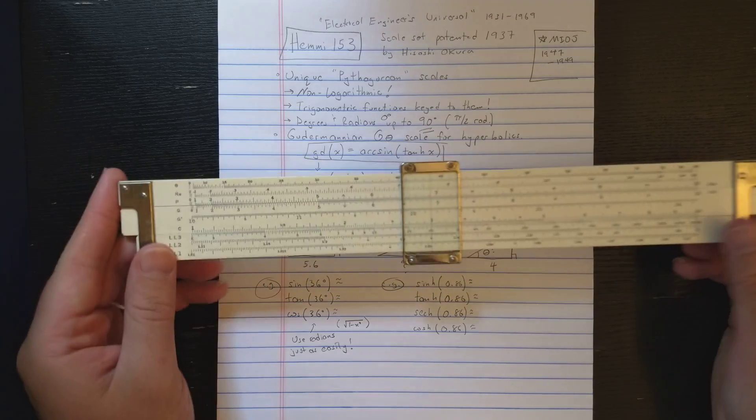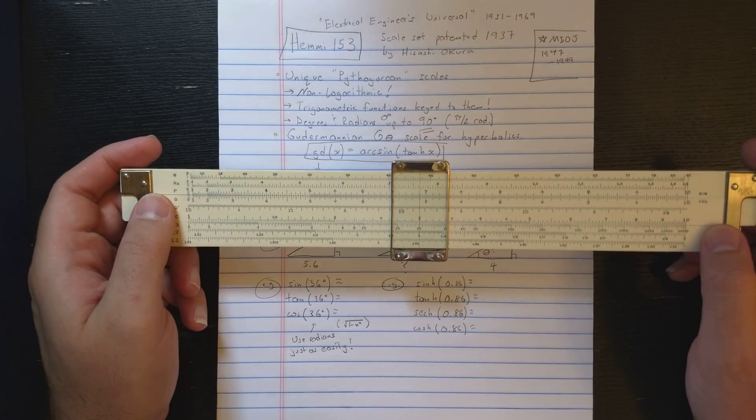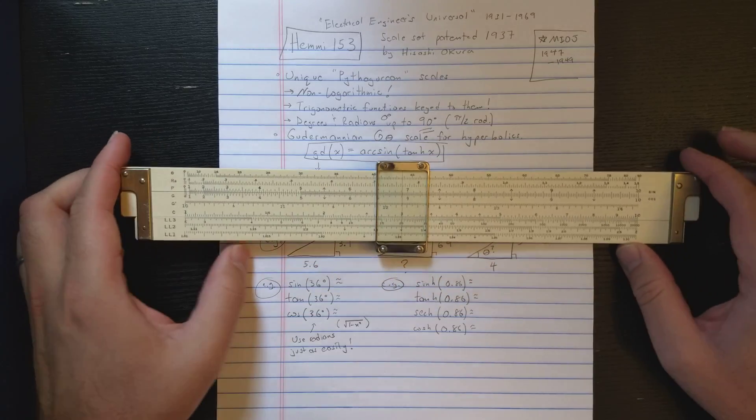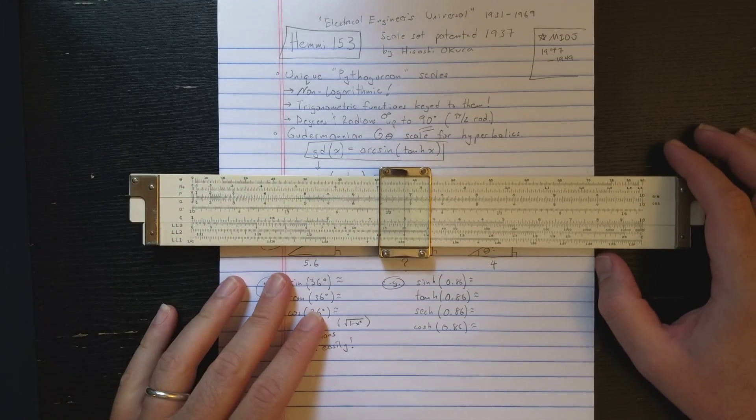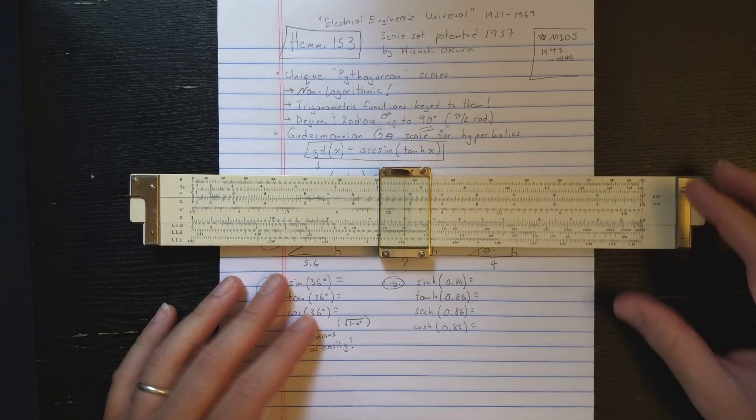But, let's start by looking at the back here. So it has this P, Q, and Q' scales. These scales actually are useful for computing the Pythagorean theorem.